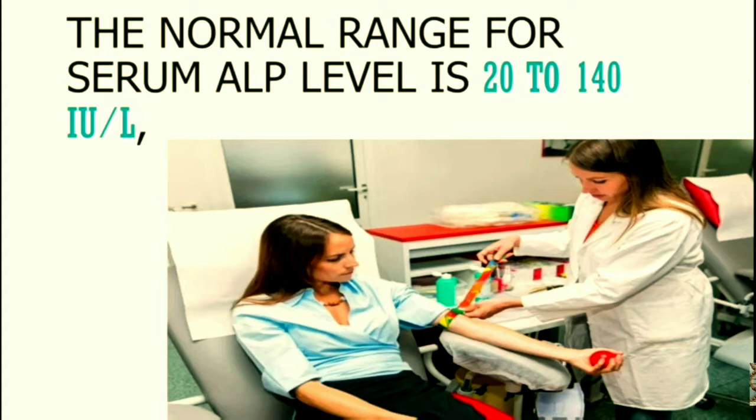The normal range of serum alkaline phosphatase level is 20 to 140 international units per liter, but this can vary from laboratory to laboratory. The normal range runs higher in children and decreases with age. The best way to know what is normal or not is to discuss the results with your doctor, who will be able to interpret the lab's specific results and reference range.